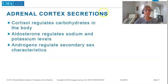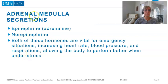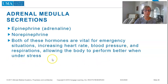Adrenal cortex secretions: cortisol regulates carbohydrates in the body; aldosterone regulates sodium and potassium levels; androgens regulate secondary sex characteristics. Adrenal medulla secretions include epinephrine and norepinephrine — both vital for emergency situations, increasing heart rate, blood pressure, and respirations, allowing the body to perform better when under stress.